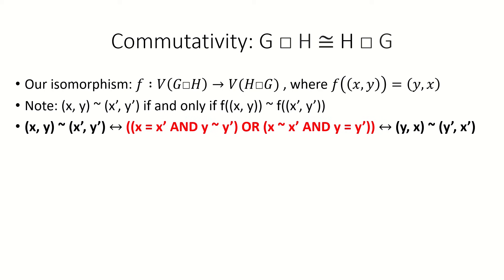Intuitively, the Cartesian product is commutative because of the symmetry of its two conditions, where if we swap the x's with y's and the y's with x's, we get the same exact set of adjacency conditions.